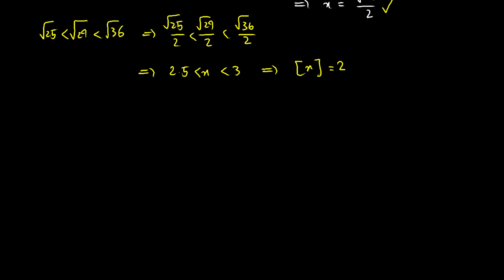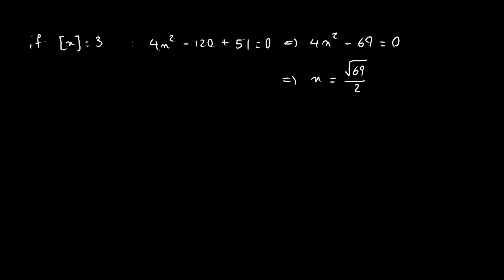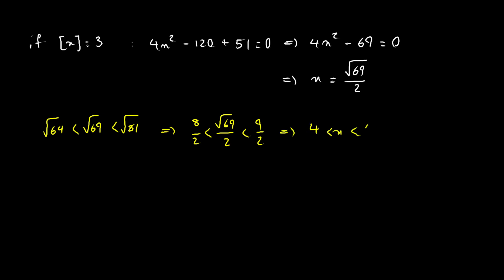Now assume floor of x equals 3. We have 4x squared minus 120 plus 51 equals 0, giving 4x squared minus 69 equals 0, so x equals √69 over 2. To check: √69 lies between √64 and √81, so x lies between 4 and 4.5, meaning floor of x equals 4. That contradicts our assumption of floor of x equals 3, so this solution is not valid.